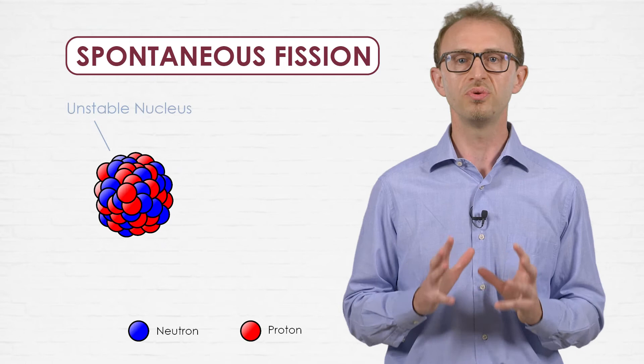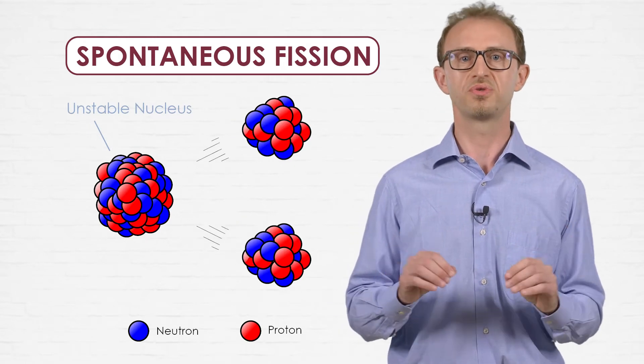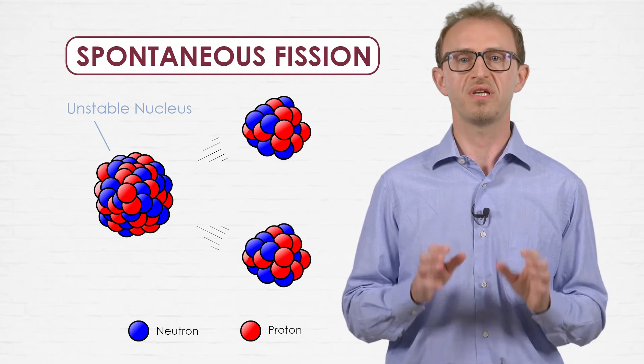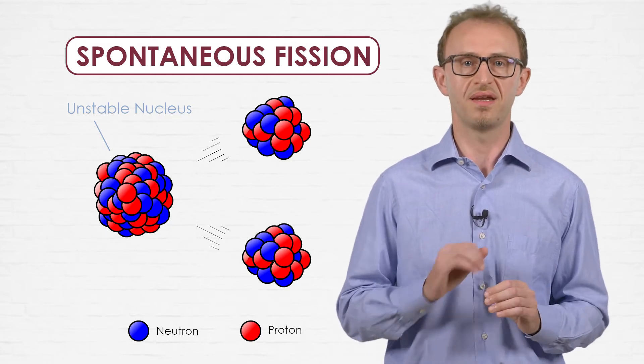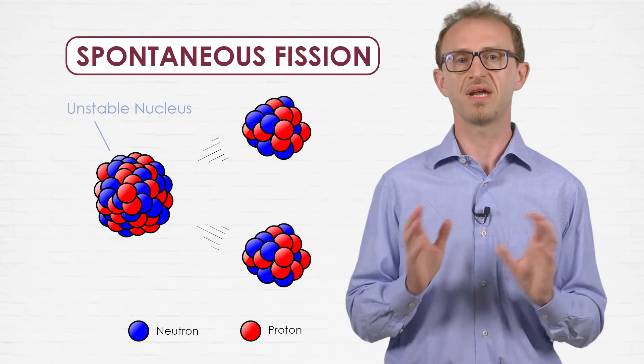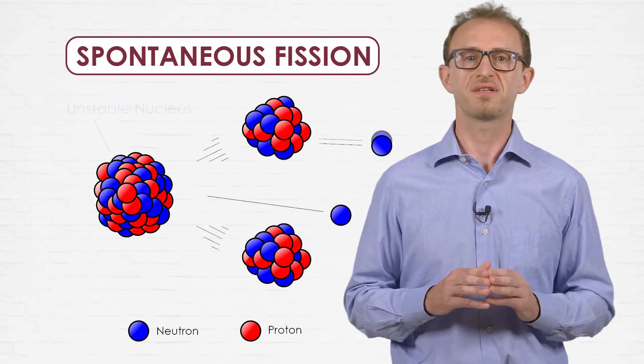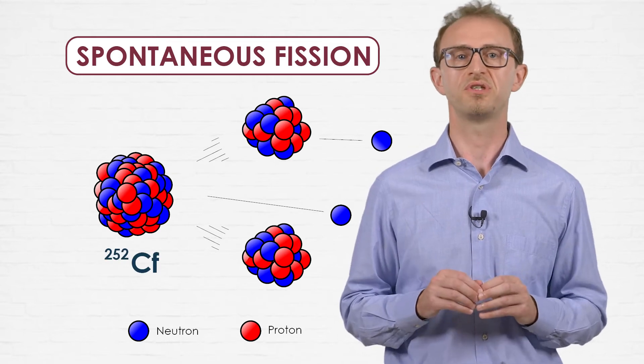In a spontaneous fission, an unstable nucleus splits into two lighter nuclei. The products are always highly unstable and eject, sooner or later, one or more neutrons.